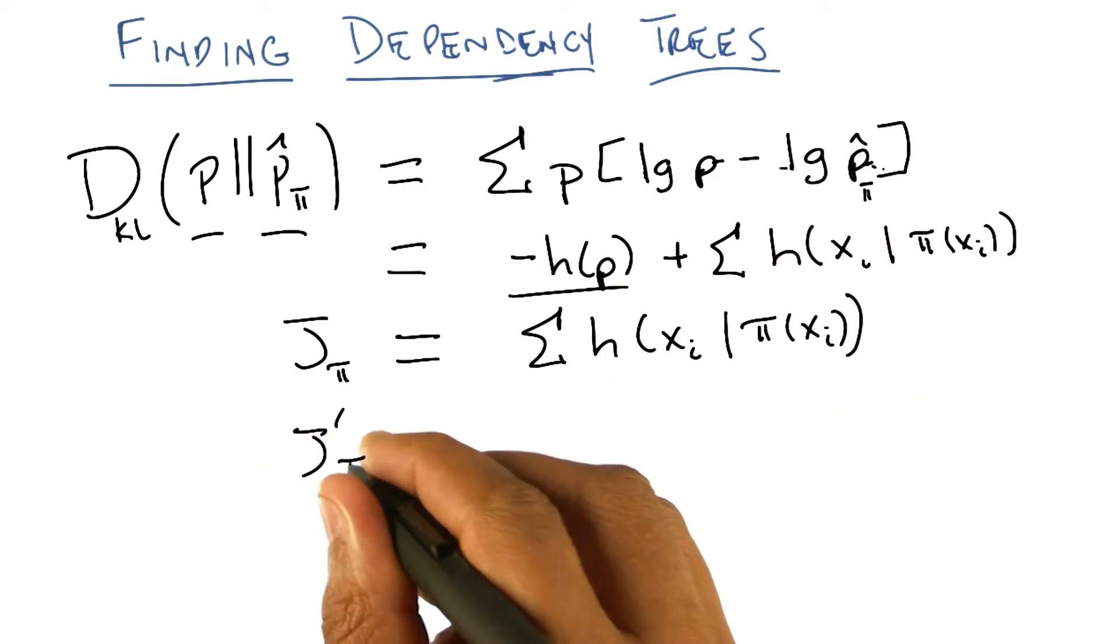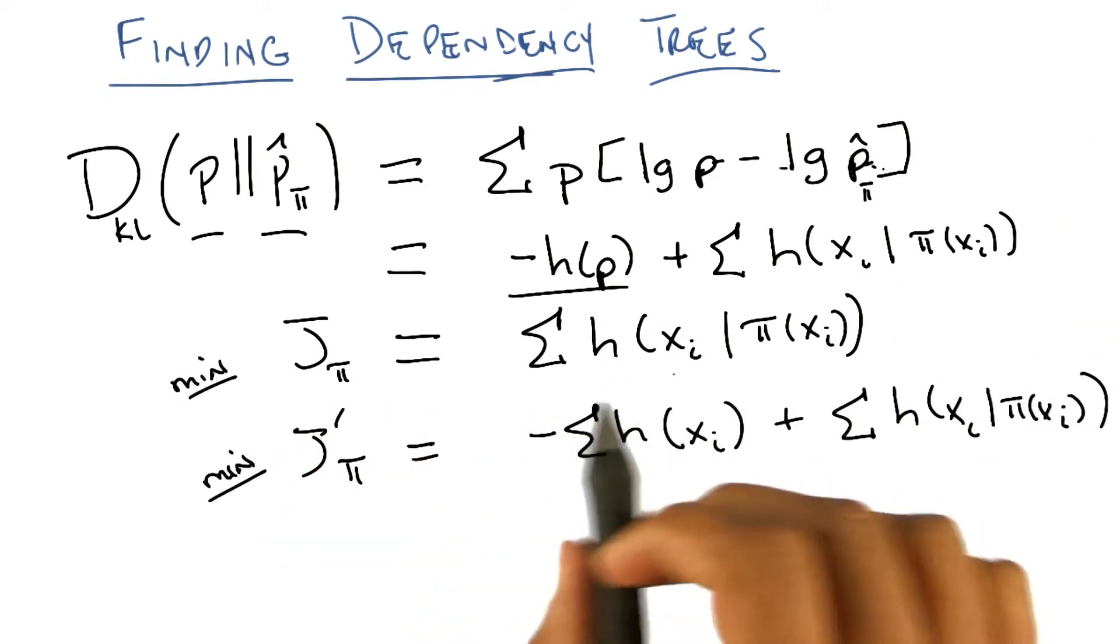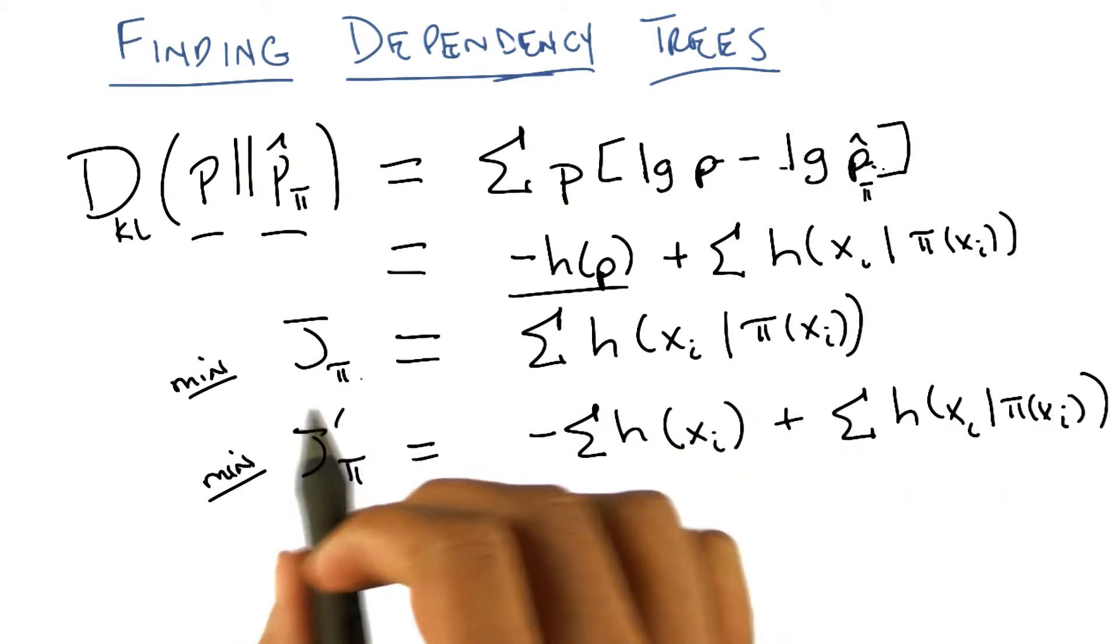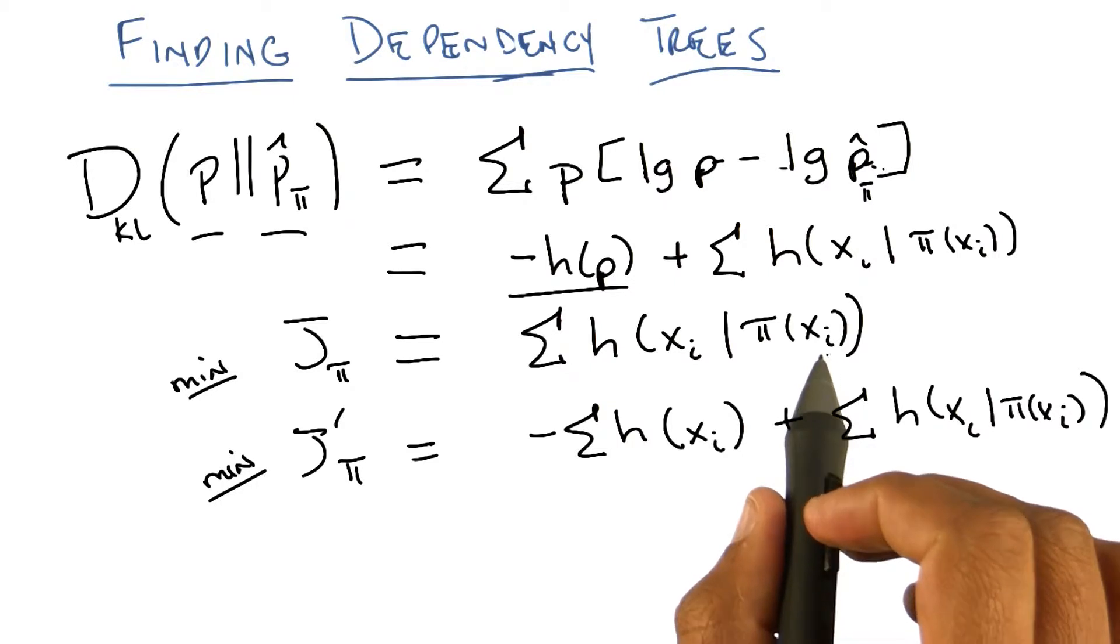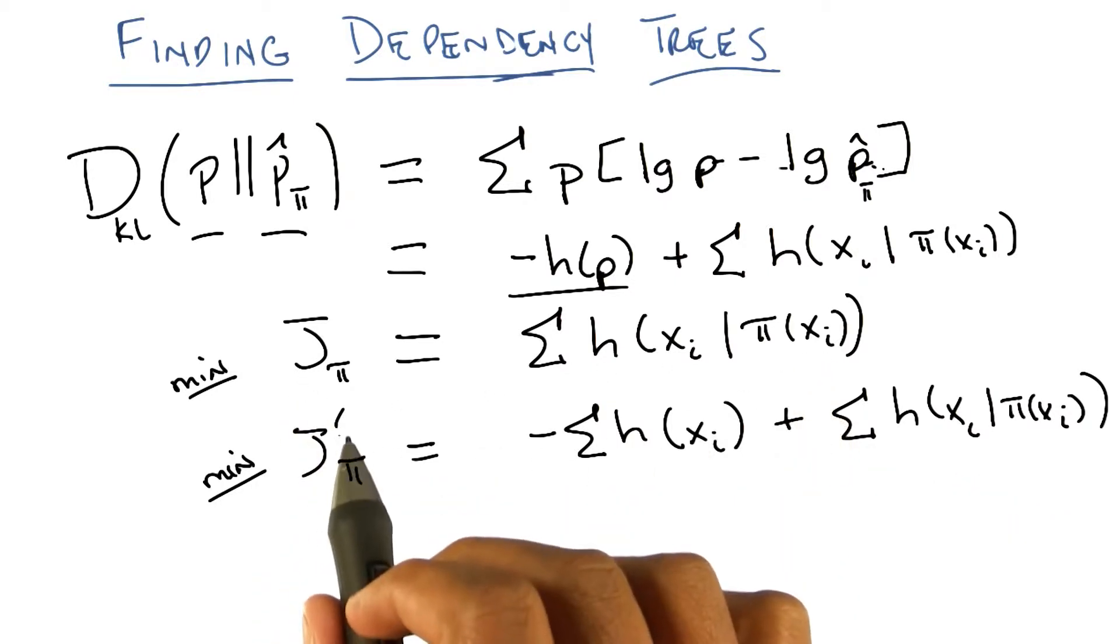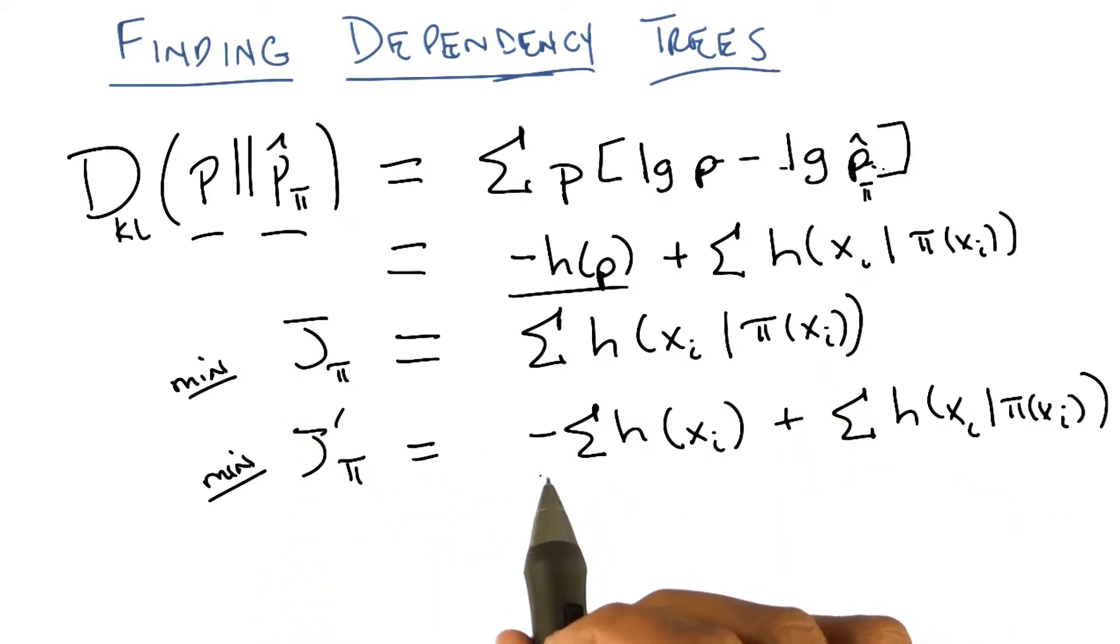What I'm going to do is define a slightly different version of this function, and I'm going to call it J hat. So as I said before, we want to minimize this particular cost function J, which we get directly from the Kullback-Leibler divergence. And so all I've done is define a new function J prime where I've added this term, just minus the sum of all of the unconditional entropies of each of the features. Now I'm able to do this because nothing in this depends upon π, and so it doesn't actually change the proper π.